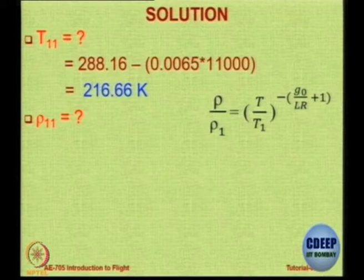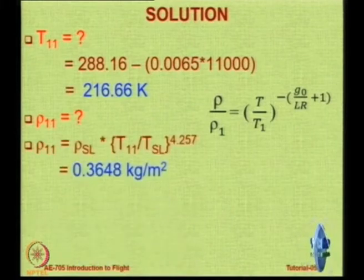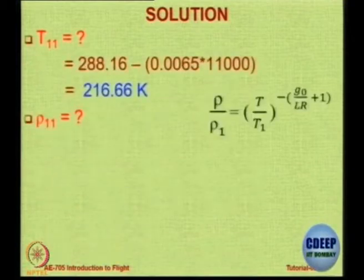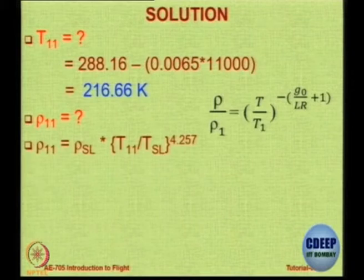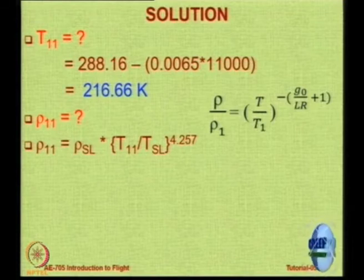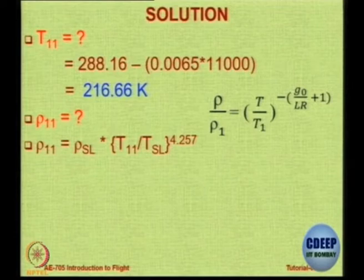ρ/ρ₁ = (T/T₁) times that ratio. I have simplified the formula — please memorize it as you will use it many times. Density ratio up to 11 kilometers: for most aeronautical engineering cases you will be within 11 kilometers. Within 11 km it is very simple — temperature ratio to the power 4.257.